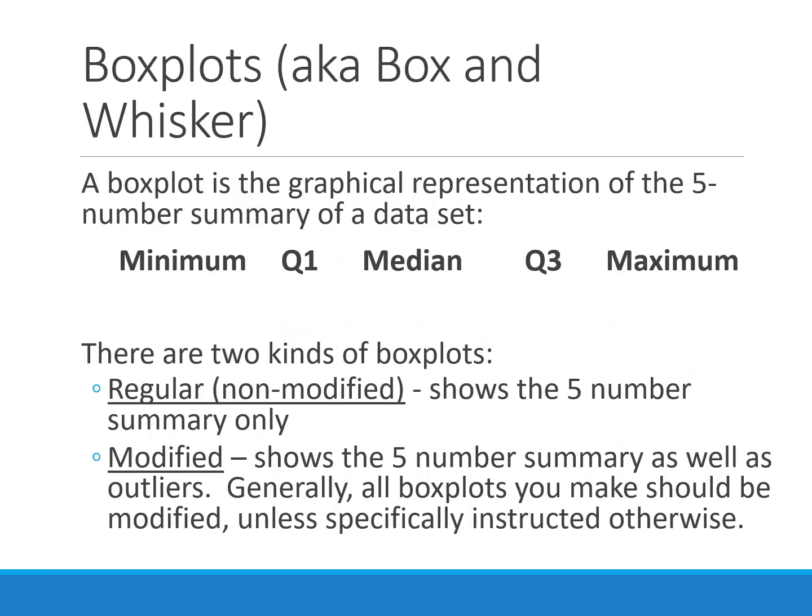Nine times out of ten, when we find quartiles, we're finding them as part of a five number summary, which we use to make a box plot. A box plot is a graphical representation of the five numbers we can boil a data set down to: the minimum, the maximum, and the three quartiles. There are two types of box plots — a regular box plot and a modified box plot. The difference is that the modified box plot shows outliers, while the regular one does not.